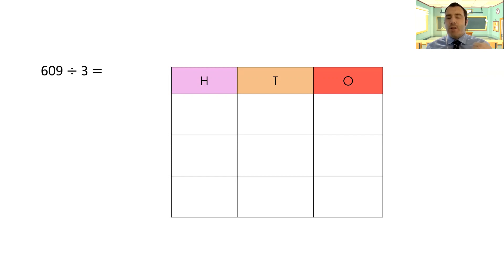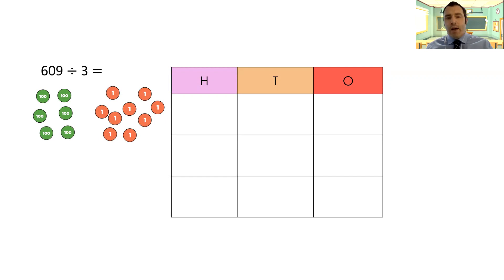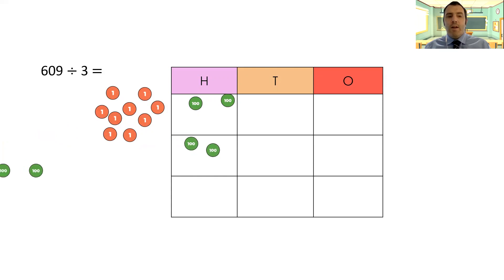Now what I need to do is start putting the numbers in, looking at place value. First, I've got six hundreds to share equally, and nine ones. I don't have any tens at the moment — I might need to do some exchanging, so I'll keep that in mind. We're going to look at the hundreds first. Six hundreds — I can put them into my hundreds column. It's going to be two in each row because three times two makes six.